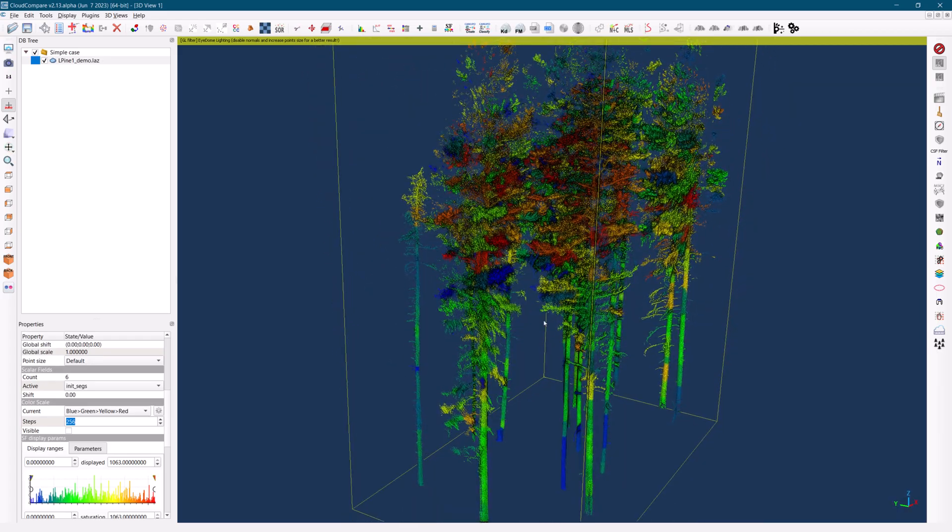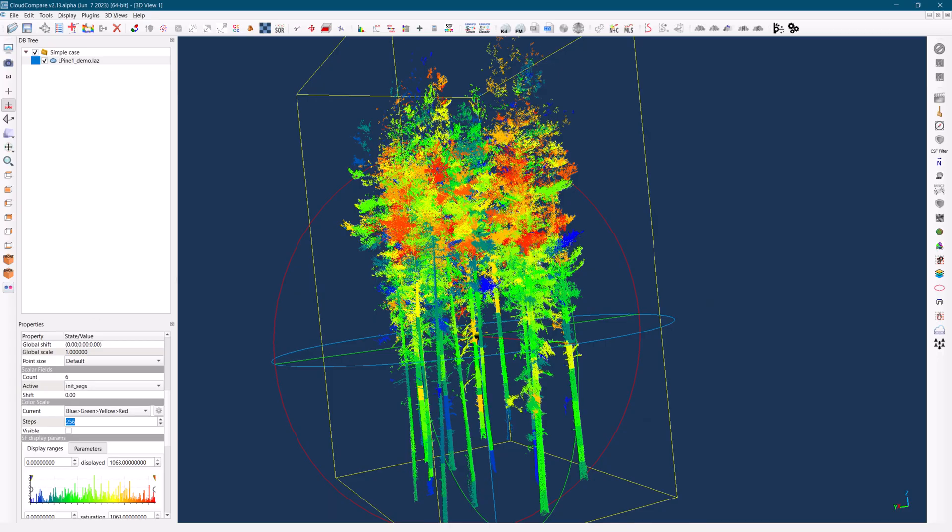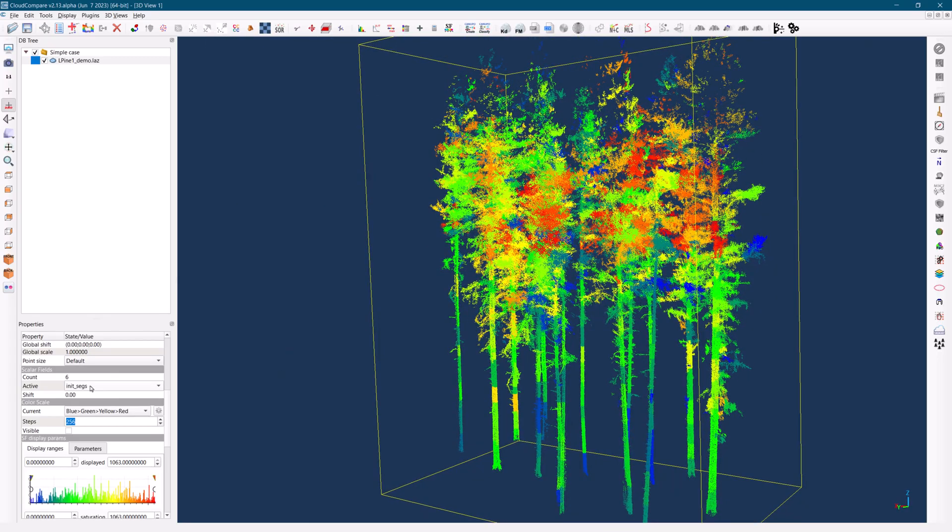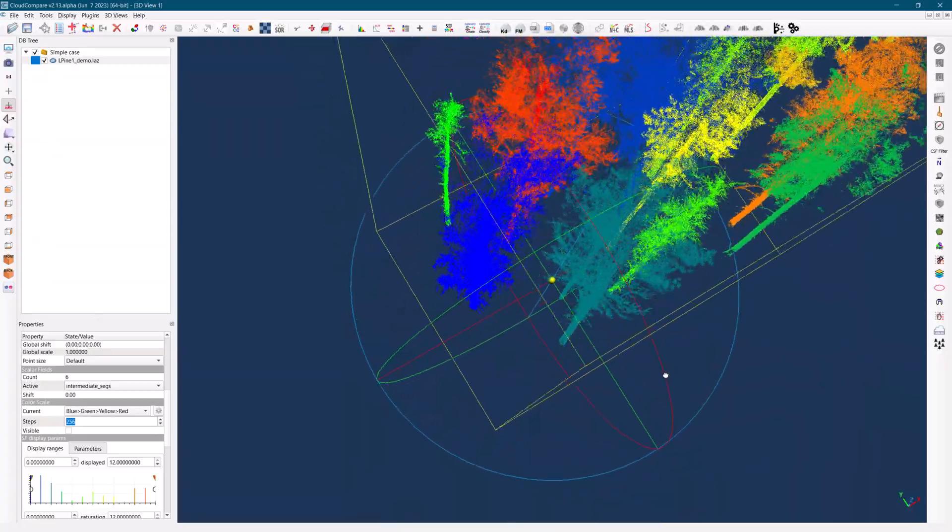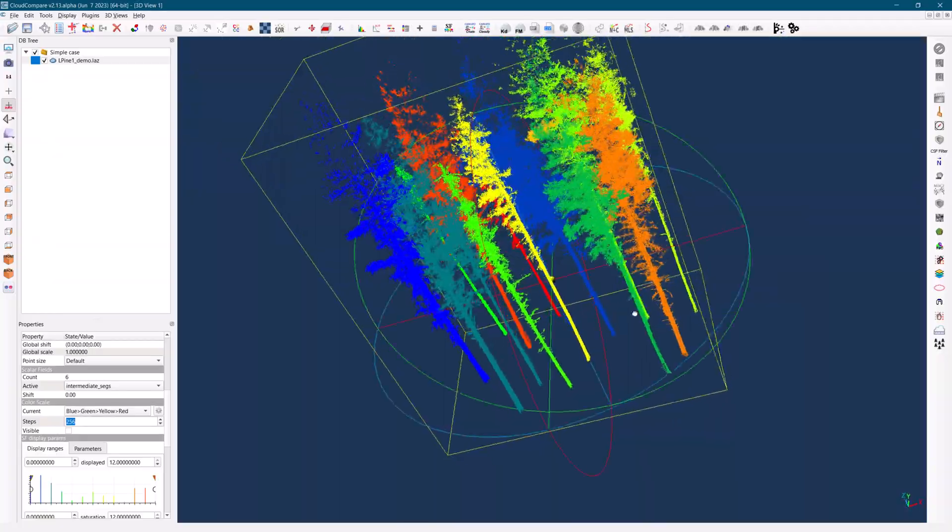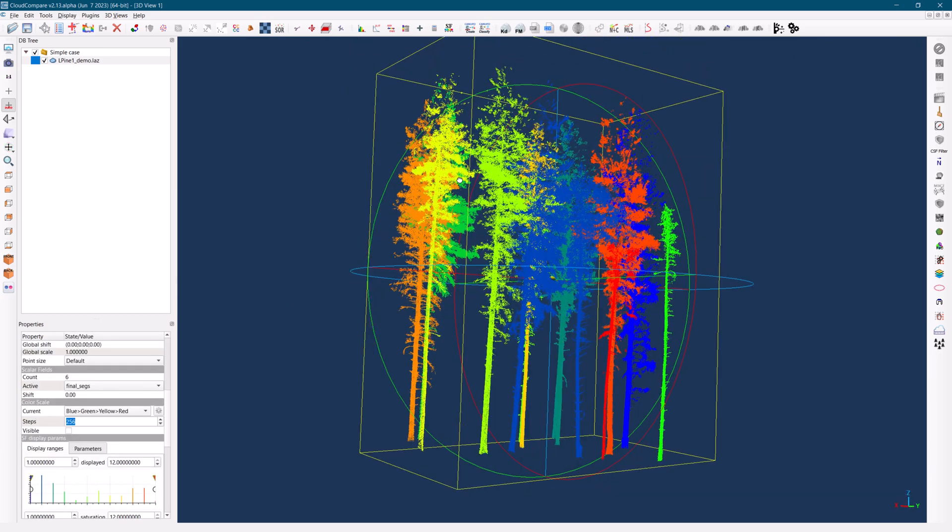In the Properties menu, you can explore the initial segments, intermediate segments, and final segments, which represent the isolated trees.